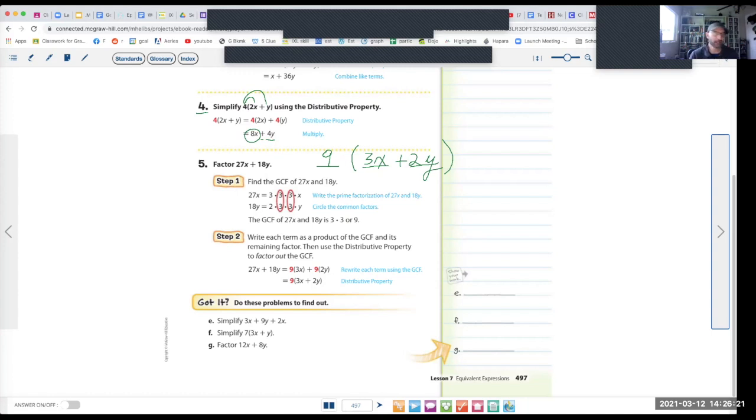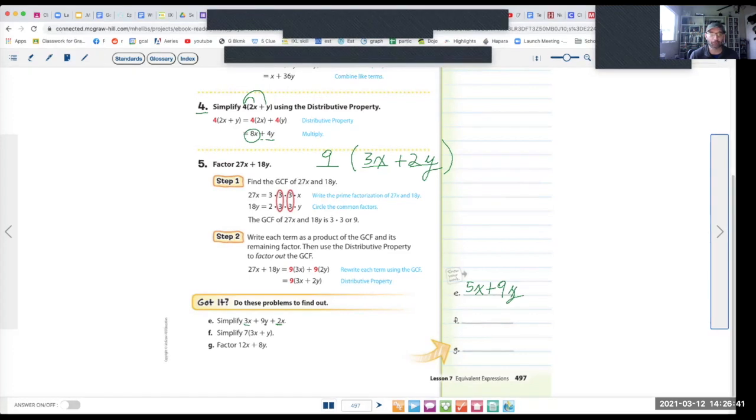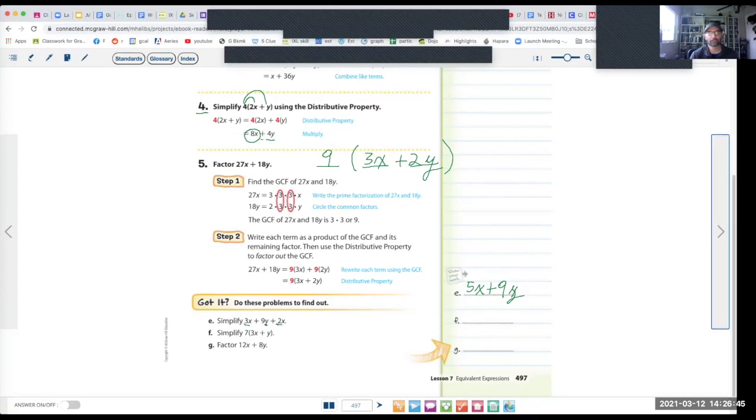All right, you try letter E. Ready? Go. Okay, so this is pretty easy. You have 3x plus 9y plus 2x. You combine the x's. 3x plus 2x is going to be 5x plus 9y. It's really important, don't forget to put the variables in there. If you did 5x plus 9, that would be wrong. If you leave out the variables, that's a big problem.